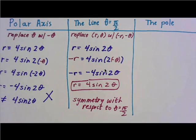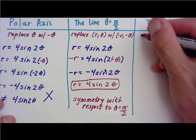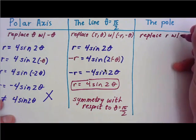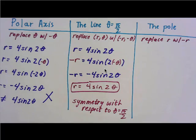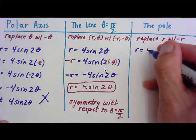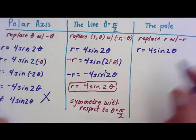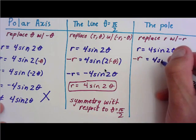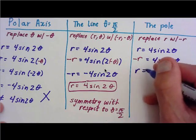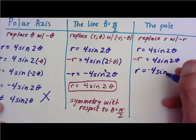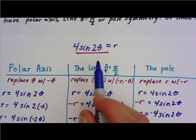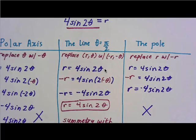Let's do the last test just for practice. For pole symmetry, we replace r with negative r, giving −r = 4sin(2θ), which solves to r = −4sin(2θ). That does not equal the original, so this equation does not have pole symmetry. If you have any questions or comments, you can type them below. We'll see you next time.